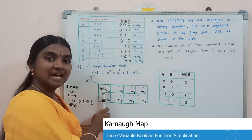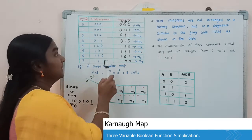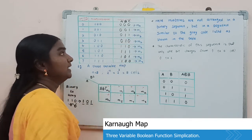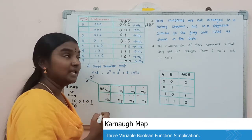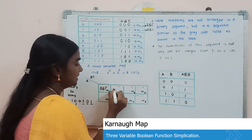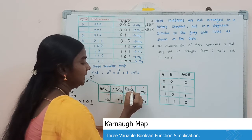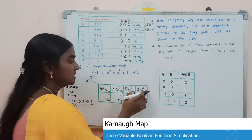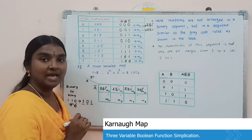In min terms, 0 bits are represented with complement variables and 1s with normal variables. So M0 = A'B'C'. Similarly, M1 = A'B'C, M3 = A'BC, and M2 = A'BC'. If we observe the first row, the A complement variable is common, so for the first row we take A' as the common variable.